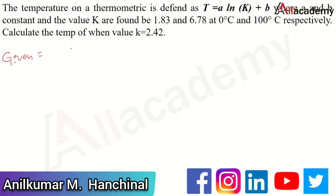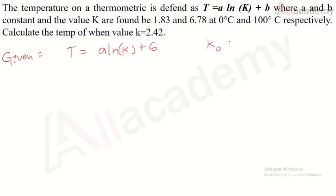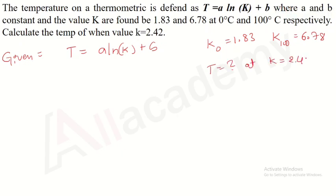Given: the temperature equation t = a·ln(k) + b. The value of k at 0°C (ice point) is 1.83, and at 100°C (steam point) it is 6.78. We need to identify the temperature at k = 2.42. To do that, we first need to identify the constants a and b.